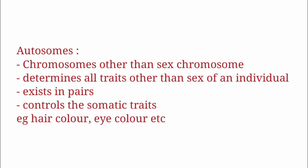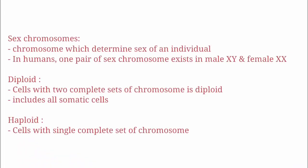Now let's learn the next terminologies. The first is autosomes. Autosomes are chromosomes other than sex chromosomes. They determine all traits other than the sex of an individual and exist in pairs. They control somatic traits — traits not involving reproductive cells. Examples of somatic traits include hair color and eye color, which don't require any reproductive part.